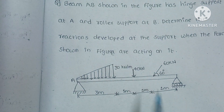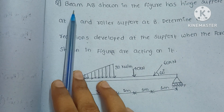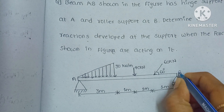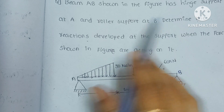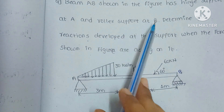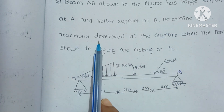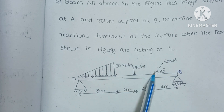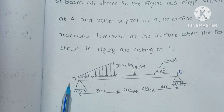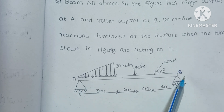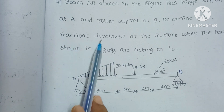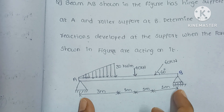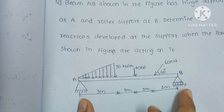First, let's look at today's problem. The beam AB shown in the figure has a hinge support at A and a roller support at B. We need to determine the reactions developed at the supports when the forces shown in the figure are acting on it. This is the hinge support and this is the roller support.